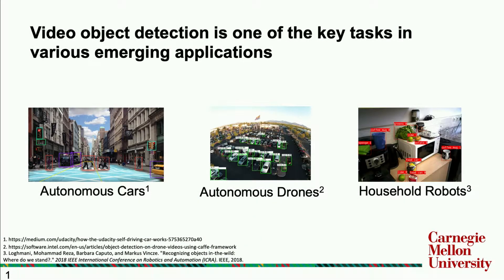As we have heard from previous talks, video object detection is one of the key tasks in various emerging applications — for example, autonomous cars, autonomous drones, household robots. All these emerging applications require video object detection capability to do more visual cognition to interact with the world. However, different applications have different requirements towards accuracy and speed.